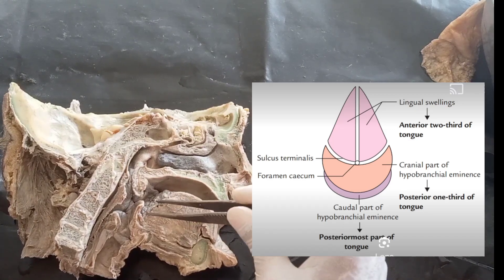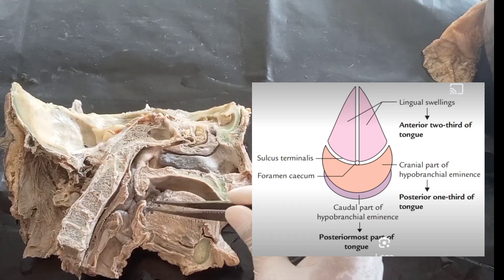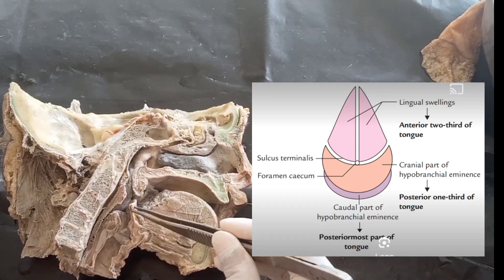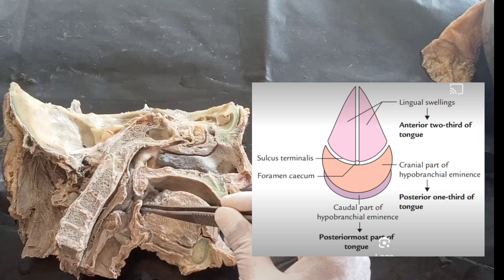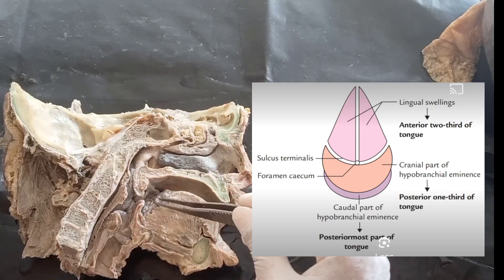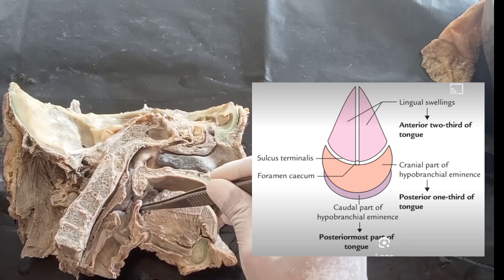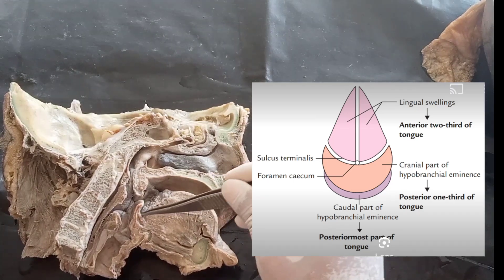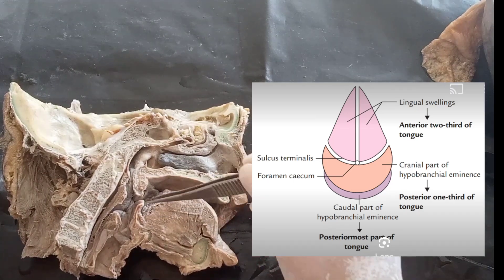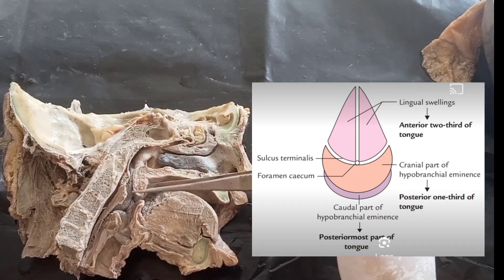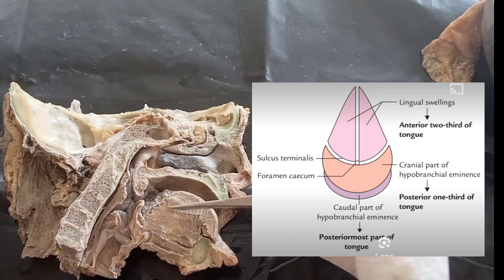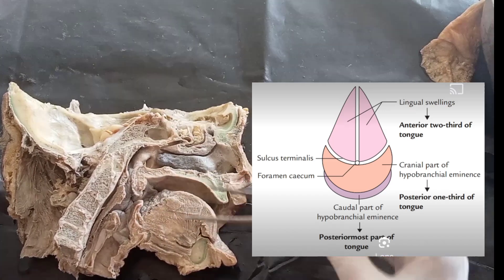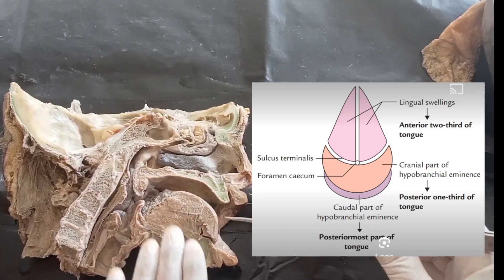This is the epiglottis on the back side. Between the epiglottis and the tongue, we have the vallecula. The blood supply of the tongue is from the lingual artery and the tonsillar branch of the facial artery.